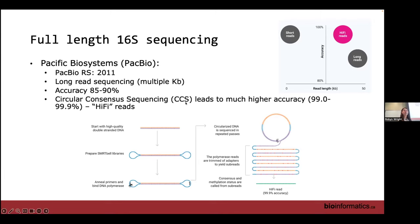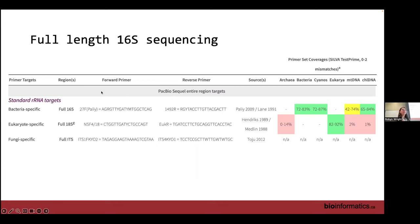PacBio long-read sequencing has been around for a while but is used more now because accuracy has improved dramatically. Originally it had multiple kilobase lengths but only 85–90% accuracy, versus Illumina's ~99.7%. They've now released circular consensus sequencing: the DNA gets circularized, sequenced repeatedly, and the hi-fi reads achieve 99–99.9% accuracy because the same region is sequenced so many times that errors don't persist. These hi-fi reads are both long and accurate, enabling full-length 16S, 18S, and ITS sequencing.